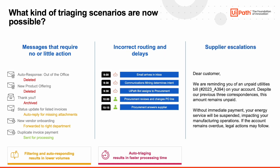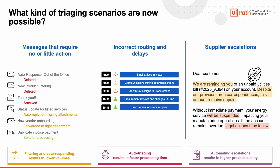Suppliers may threaten with legal actions or stopping to provide their goods or services until the open invoices are paid. Whatever the cost, it's on the accounts payable team to ensure business-critical services, such as utilities providers, are paid on time. These payment requests may need to be prioritized for same-day payments. This results in an overall higher quality process.